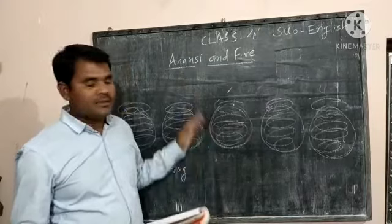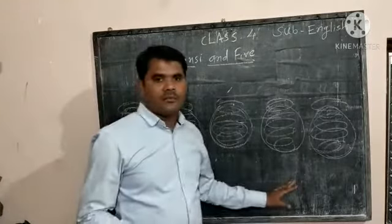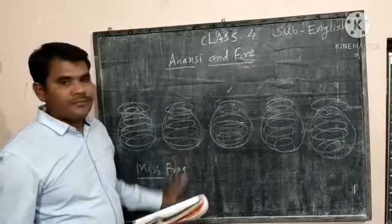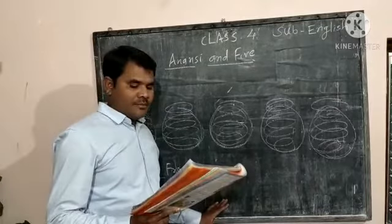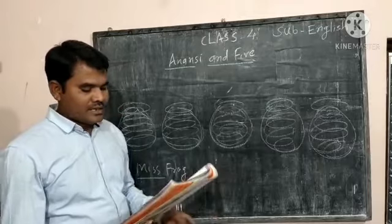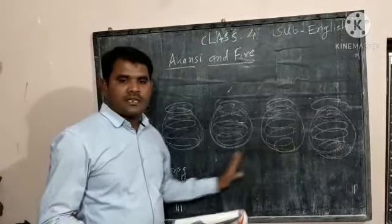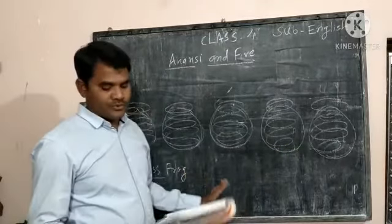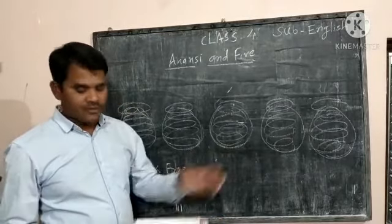Miss Frog did not stop near Anansi. Anansi said Miss Frog stop here and please help me to count these yams. But Miss Frog did not listen and went to the market. She said count them yourself. Here are the yams, count them yourself, you can count them. And now she hopped away. She started to go.